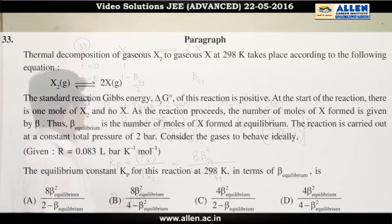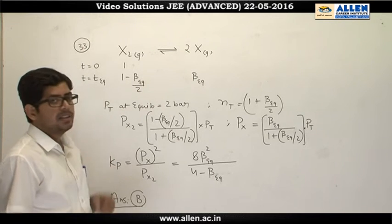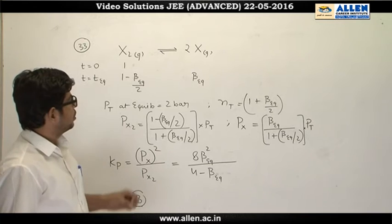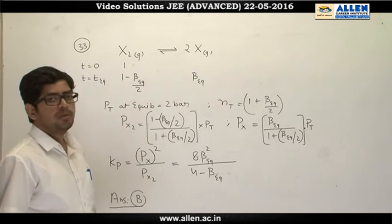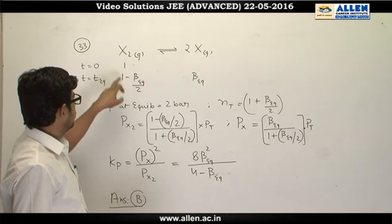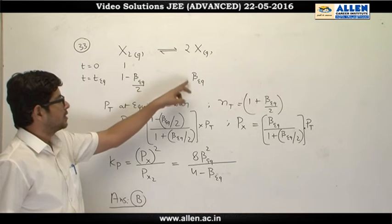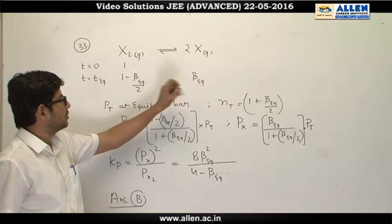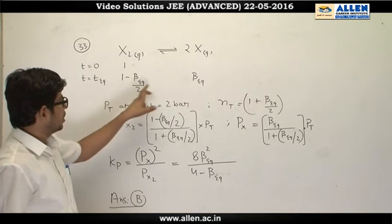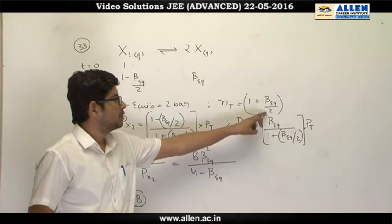Is question mein reaction ho rahi hai: x₂ gas se 2x gas ban raha hai. Initially x₂ ka mole given hai = 1. Equilibrium par x gas ka mole beta_eq hai. Equilibrium par x₂ ka mole hoga 1 minus beta_eq/2 aur x ka mole beta_eq. Equilibrium par total pressure 2 bar given hai. Total moles at equilibrium = 1 + beta_eq/2.